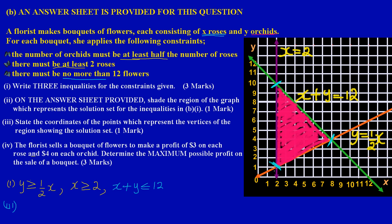For the first vertex: coming down to the x-axis gives x = 2, and going across to the y-axis gives y = 1, so the coordinate is (2, 1). For the second vertex: coming down to the x-axis again gives x = 2, but going across to the y-axis gives y = 10, so that coordinate is (2, 10).